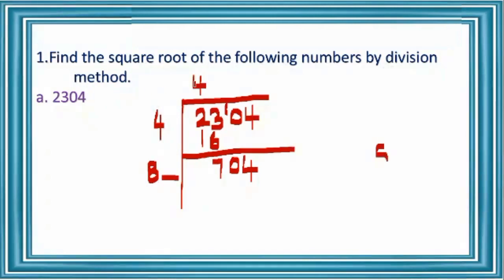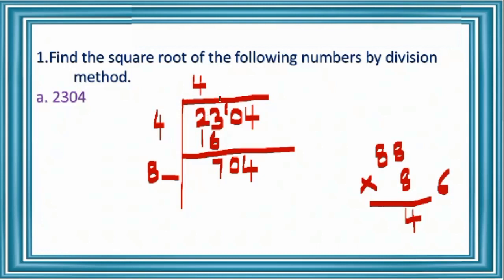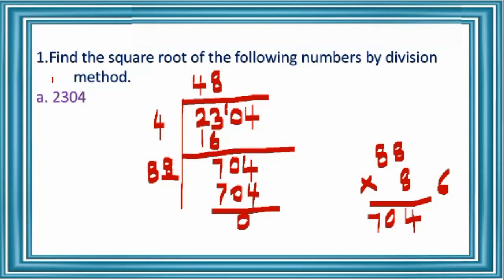That same number you should multiply and the product will not exceed 704. So 82 into 2 is 164, which is much less than 704. So try 88: 8 eights are 64. 88 into 8: 8 eights are 64, remainder is 6; 8 eights are 64, 64 plus 6 is 70. So the exact number 704 we got. You can write 704, and 8 you can write at the right side of the divisor and in the quotient place also. So 704 minus 704 is 0. Therefore the square root of 2304 is equal to 48.